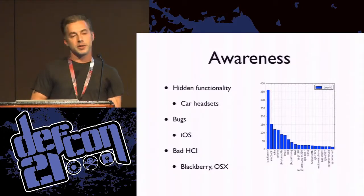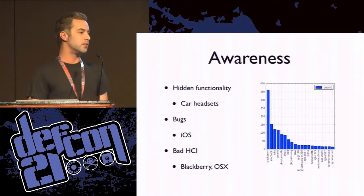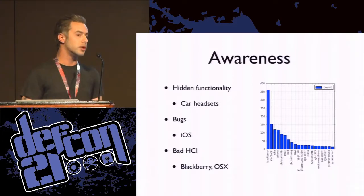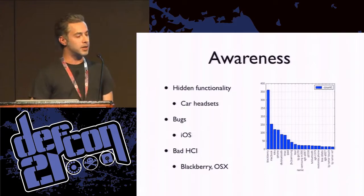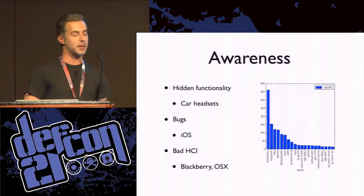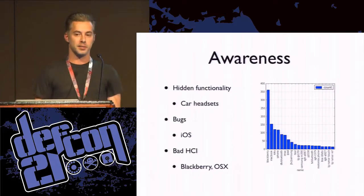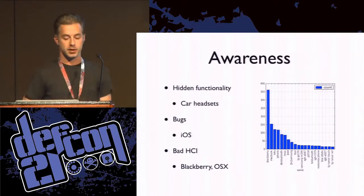I believe another reason why there are so many discoverable Bluetooth devices out there is bad human-computer interface. Vendors just give you that permanent discoverable button when you really don't need it. I'm not picking on Apple here — they did it right with iOS despite the bug I mentioned — but in OS X they don't. They could have done the same thing where going into the configuration page makes you discoverable and leaving makes you not, but they have that permanent button. I believe that happens with BlackBerry too.